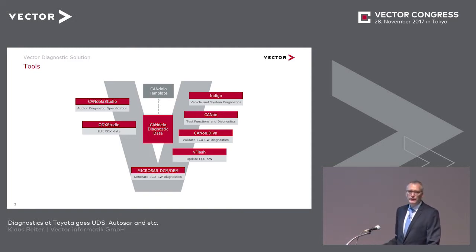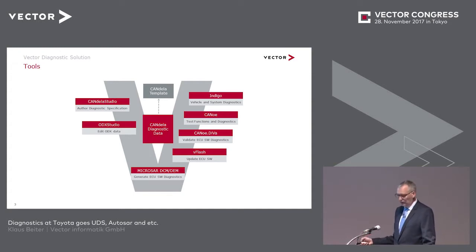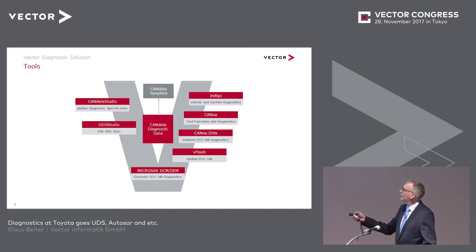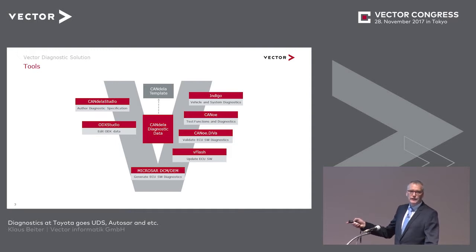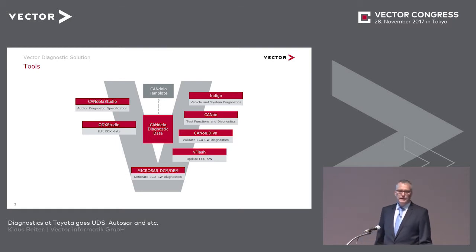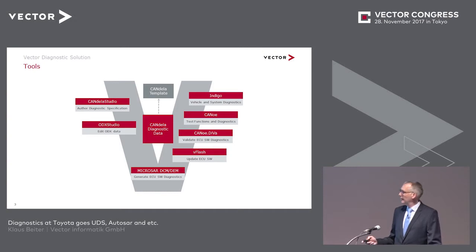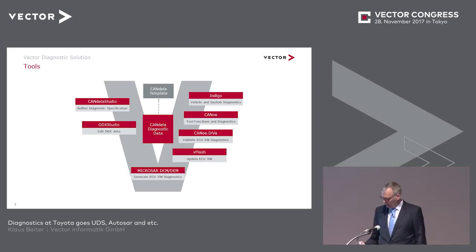At the bottom of the V-Model we have the diagnostic-relevant AUTOSAR software components and corresponding configuration tools. On the right-hand side is the pure diagnostic tester Indigo. Canoo also comes with diagnostic functionality if you load the CDD file. Canoo Diva is a tool for the automatic generation of test cases and the execution of these test cases. V-Flash is our flash tool.